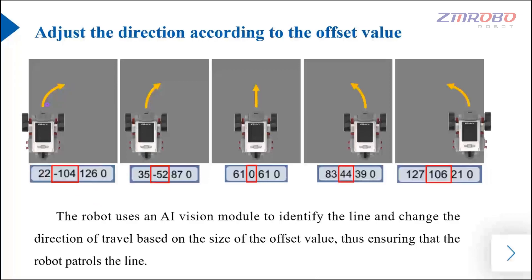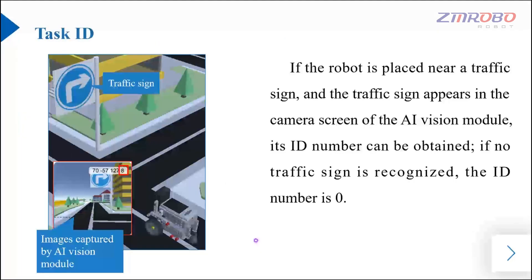Therefore, visual line patrol means the robot uses the AI vision module to identify the line and changes the direction of travel according to the size of the offset value. If we place the robot near a certain traffic sign and this traffic sign appears in the camera screen of the AI vision module, we can get the ID number of this traffic sign. If the traffic sign is not recognized, the returned ID number is zero.